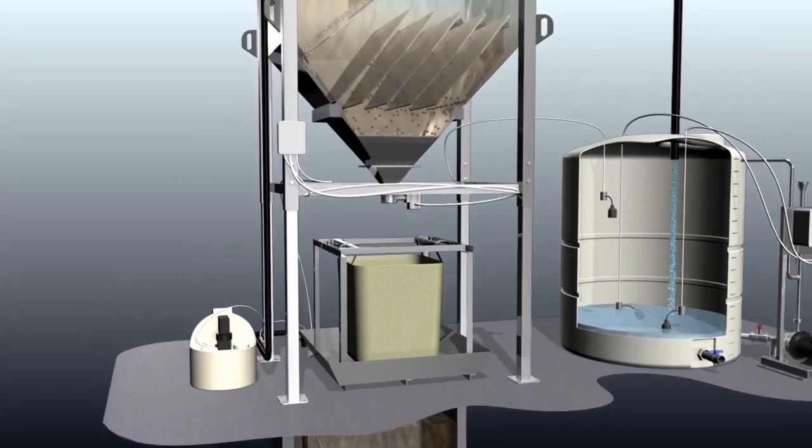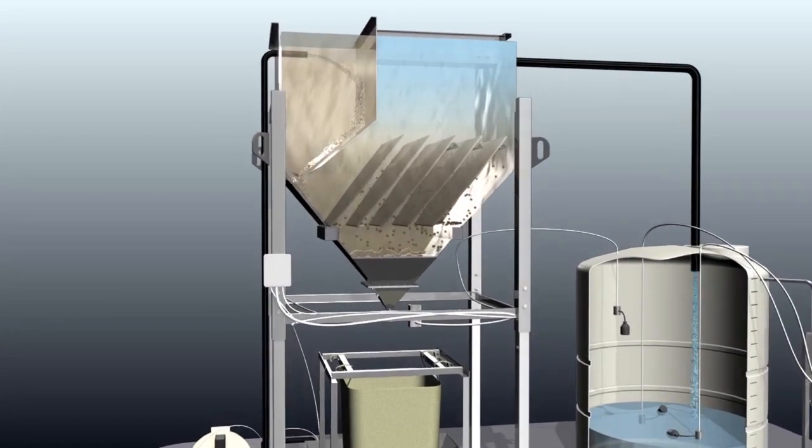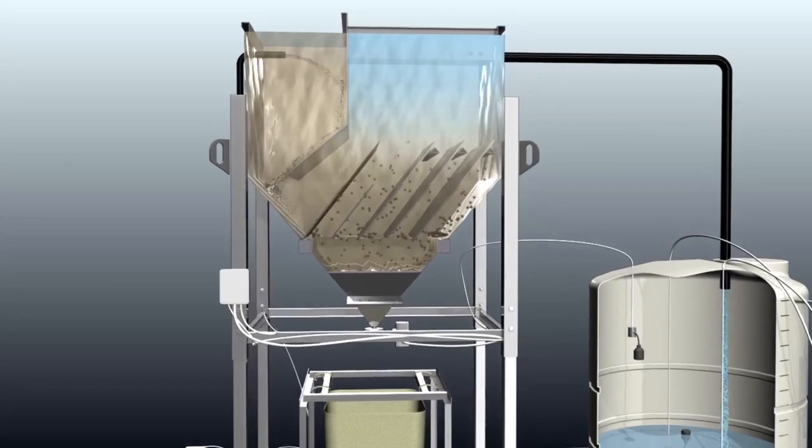A proprietary polymer blend is injected into the slurry stream. Once in the settler, water is forced to travel through a series of engineered plates.